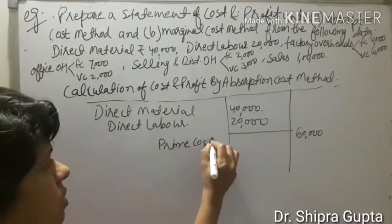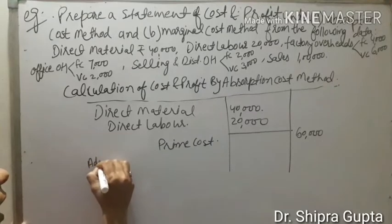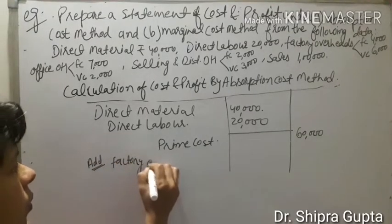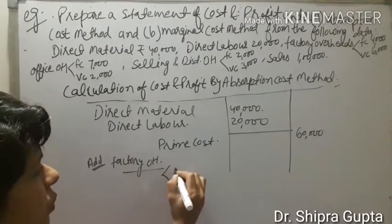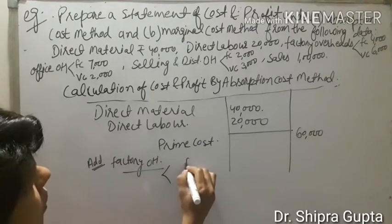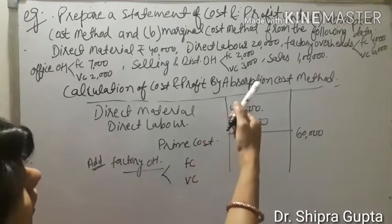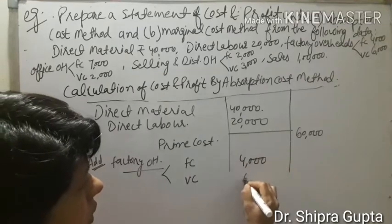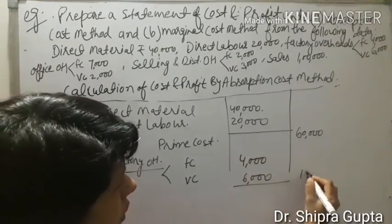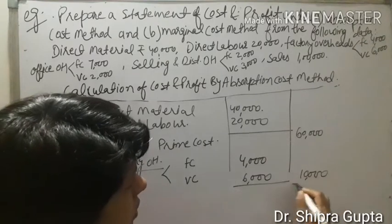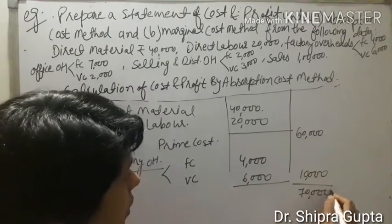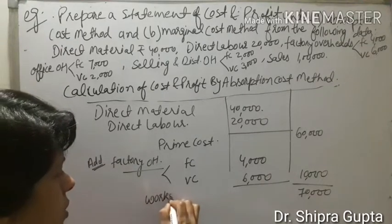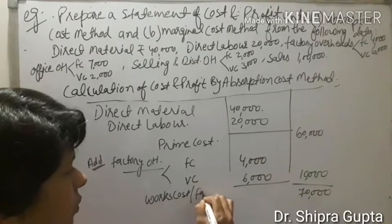This total of Rs. 60,000 is known as prime cost. Then we add factory overheads, again divided into fixed cost and variable cost. Fixed cost is Rs. 4,000 and variable cost is Rs. 6,000, making a total of Rs. 10,000. The grand total of prime cost plus factory overheads is Rs. 70,000, and this is known as works cost or factory cost.